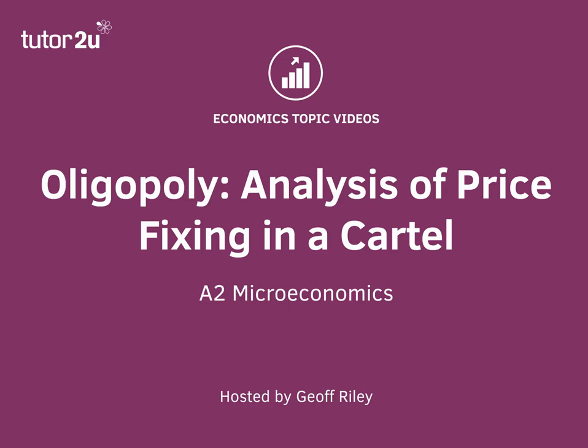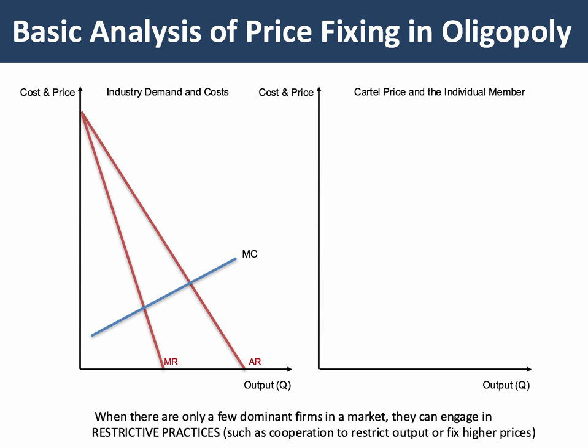Hi there. Here's a topic video looking at the analysis of a price-fixing cartel within an oligopoly. A cartel is basically any formal agreement between firms. Key firms within an industry may come together to form a cartel — a collusive agreement. They could agree to fix the price, fix the output, share the market out, allocate customers or geographical territories, agree not to compete on certain bids, or divide the profits up. A cartel is a collusive agreement between firms, and under EU and UK competition law, cartels are illegal.